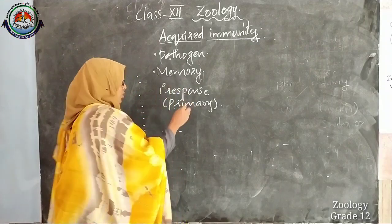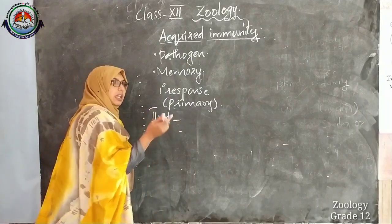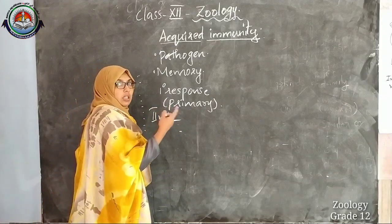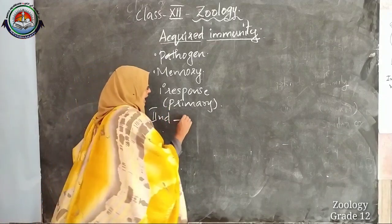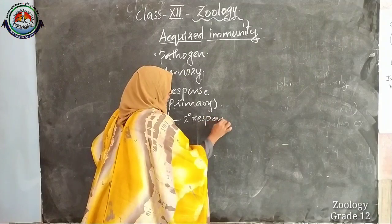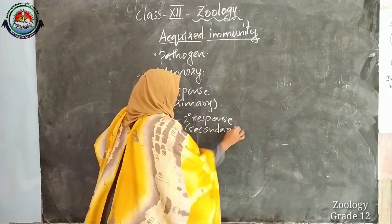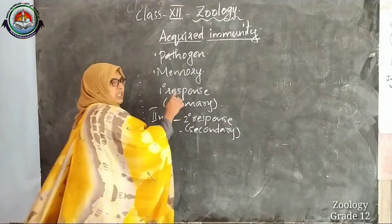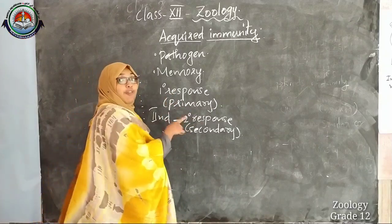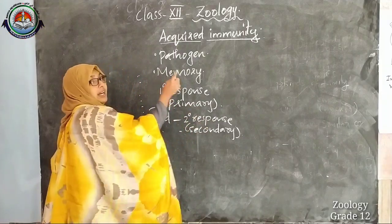When the same pathogen encounters our body for the second time, our body will elicit a response known as secondary response. Primary response will be slow and of low intensity, whereas secondary response will be fast and of high intensity. The secondary response is characterized by memory.